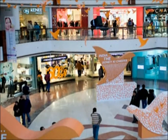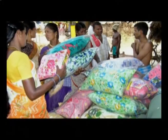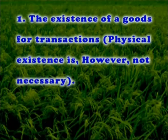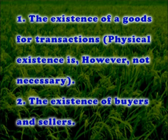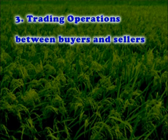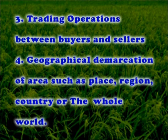For a market to exist, certain conditions must be satisfied — these conditions should be both necessary and sufficient, and may be termed the components of a market. These include: the existence of goods for transaction (physical existence is not necessary), the existence of buyers and sellers, trading operations between buyers and sellers, geographical demarcation of area such as place, region, country, or the whole world. The existence of perfect competition or a uniform price is not necessary.